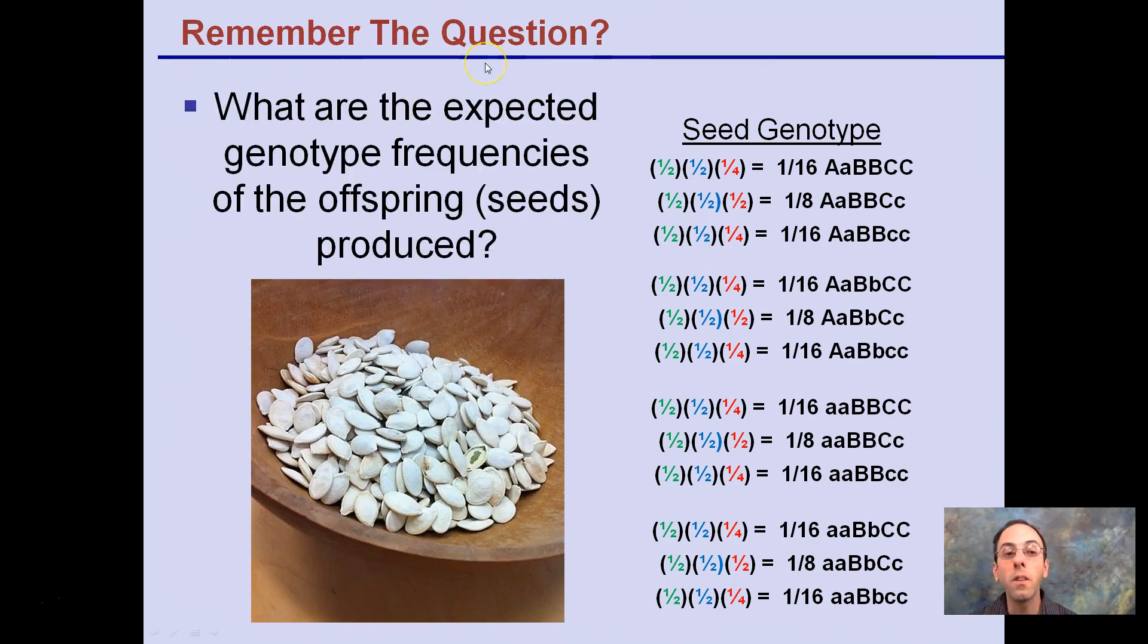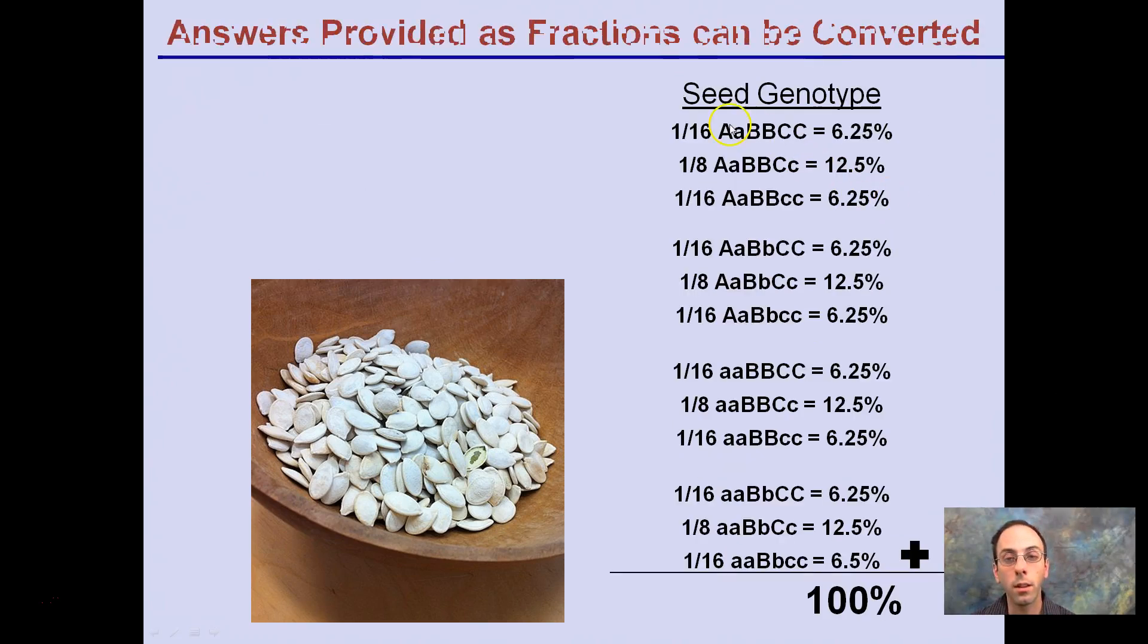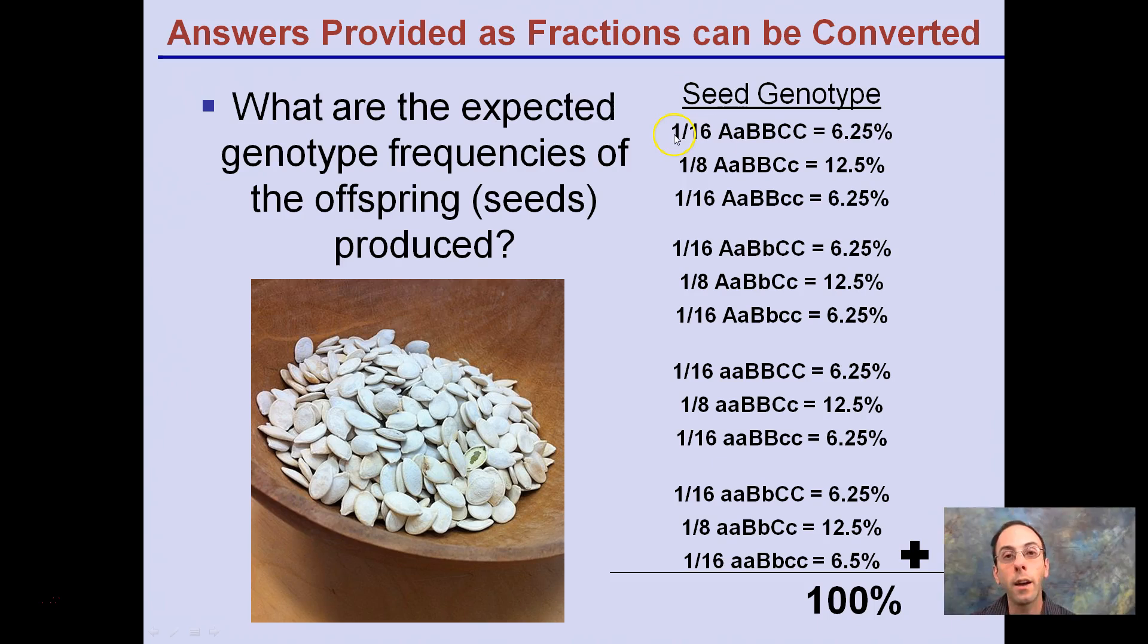As a result, getting back to the question, I don't know if you still remember it, what are the expected genotype frequencies of the offspring or seeds produced? This would be the expected genotypes. Now, these are fractions, we can easily convert these to percents, a sixteenth, divide that, one divided by 16 times 100. If we add all of these possible seed genotypes up, we notice we get 100%, which is what we should get. It's a way to check yourself when you're looking at the end.